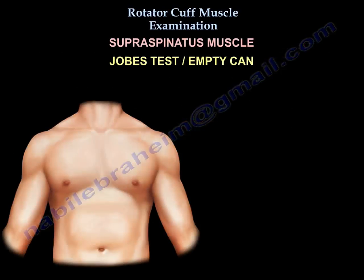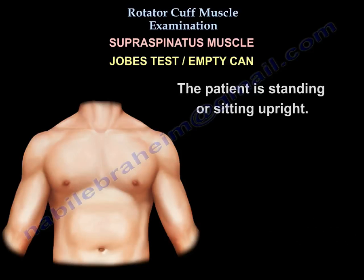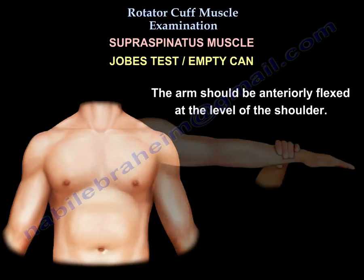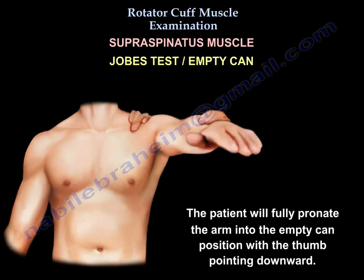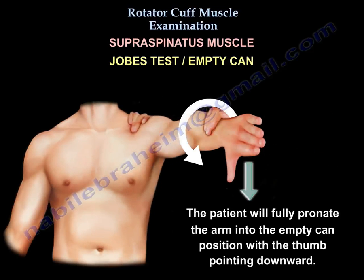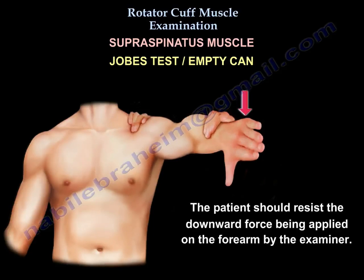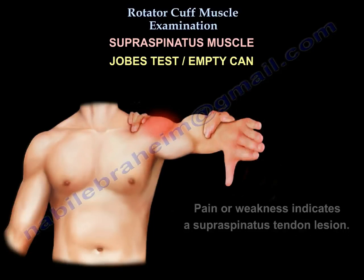The supraspinatus muscle. The best test for the supraspinatus muscle is the Job's test, the empty can test. The patient is standing or sitting upright. The arm should be anteriorly flexed at the level of the shoulder. The patient will fully pronate the arm into the empty can position with the thumb pointing downwards. The patient should resist the downward force applied on the forearm by the examiner. Pain or weakness indicate supraspinatus tendon lesion.